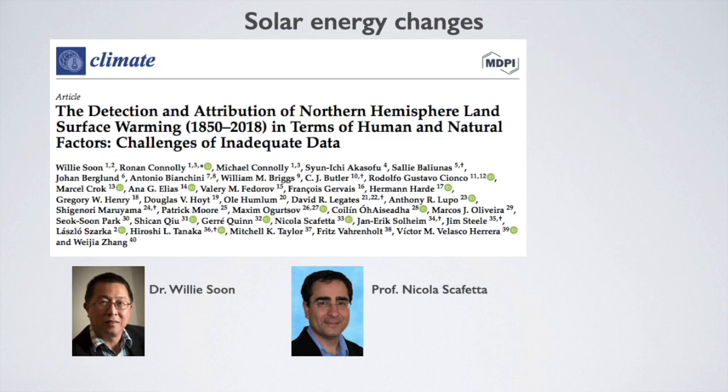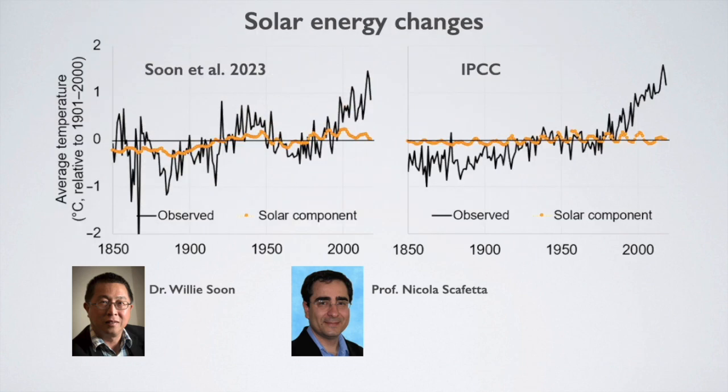This theory has been defended by Dr. Sun, Professor Scafetta, and 35 other scientists in a recent paper. To explain the sun's effect on climate, these scientists make their own temperature reconstruction based on rural stations to avoid the urban heat effect, and their own reconstruction of solar activity over the last two centuries. The graph on the left shows their reconstruction compared to the one accepted by the IPCC on the right. The difference between the two would explain a much larger effect of the sun on climate than that accepted by the IPCC.